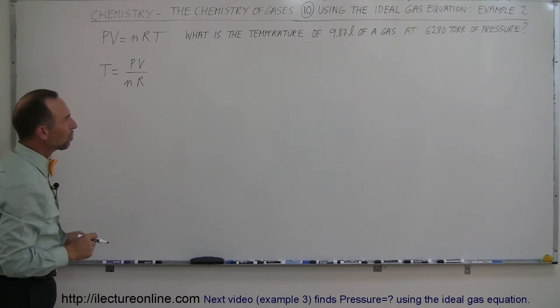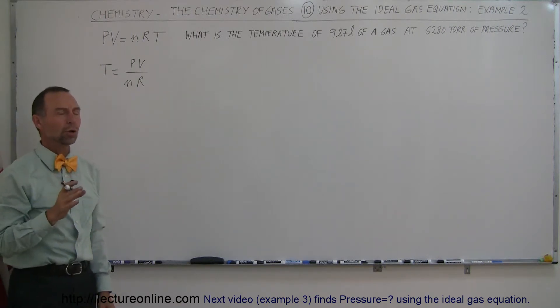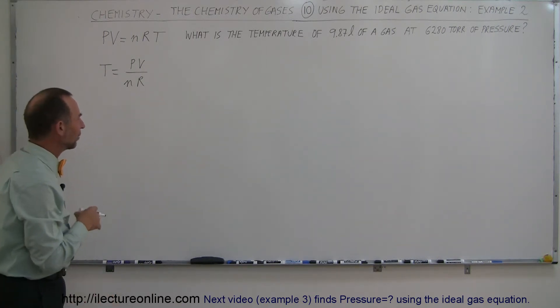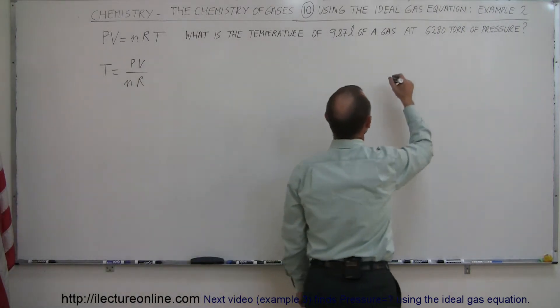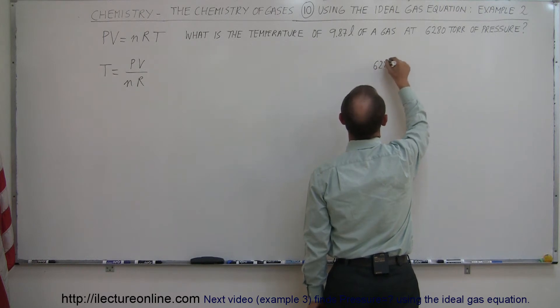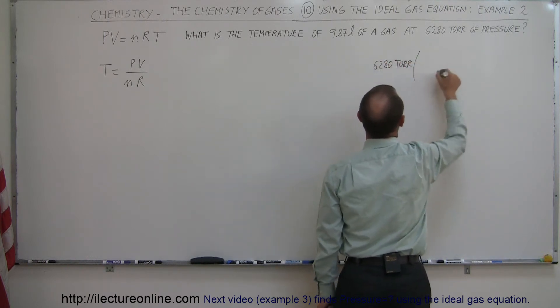They gave us pressure, but they gave us in terms of Torr, not in terms of Pascals, so we have to convert. And remember how we did that? We have an example of that in a previous video where we have 6,280 Torr, and we multiply times the conversion factor.